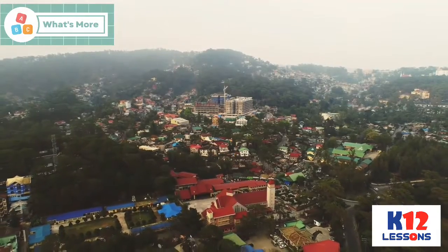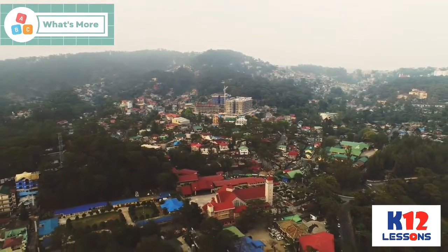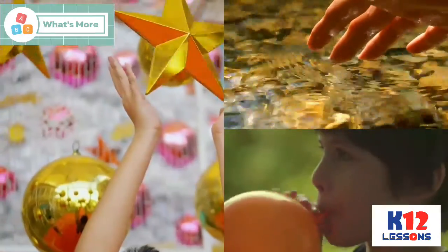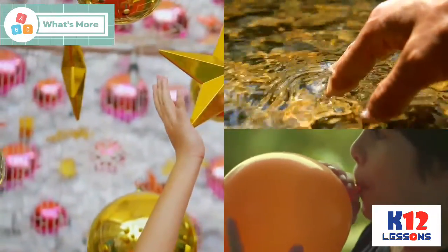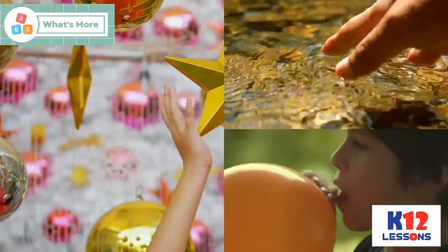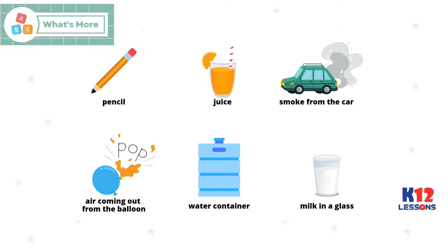Everything around us is matter. You can classify them into solid, liquid, and gas. Examples include: a pencil, juice, smoke from a car, air coming out from a balloon, a water container, and milk in a glass.